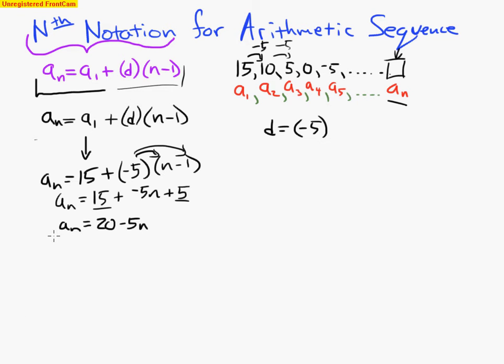So now I have an equation that can predict any single term I want. Any a_n. If I wanted a_1, well, all I have to do is put a 1 right here. What is 20 minus 5 with a 1 plugged into my n? Well, negative 5 times 1 is a negative 5. 20 minus 5 is 15, telling me that a_1 equals 15. Is that true? Yes, it's true.